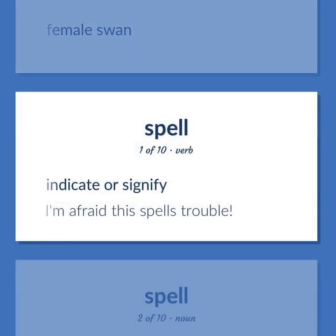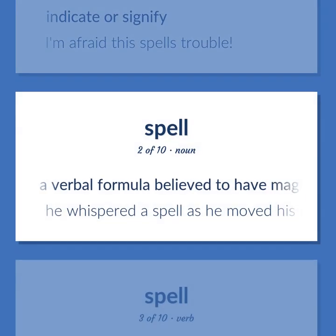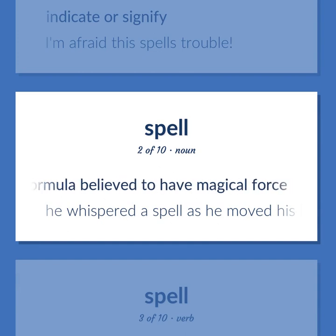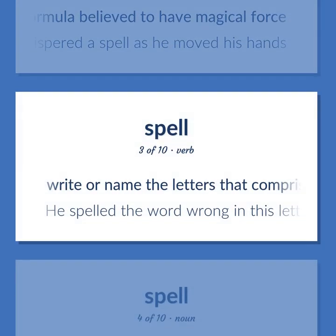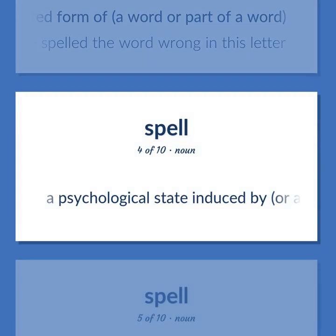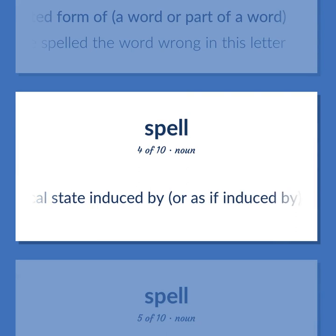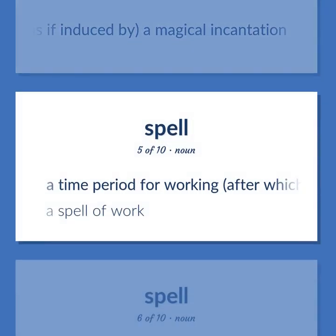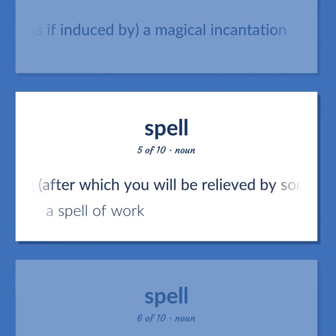Spell: Indicate or signify. I'm afraid this spells trouble. A verbal formula believed to have magical force. He whispered a spell as he moved his hands. Write or name the letters that comprise the conventionally accepted form of a word or part of a word. He spelled the word wrong in this letter. A psychological state induced by, or as if induced by, a magical incantation. A time period for working, after which you will be relieved by someone else. A spell of work.